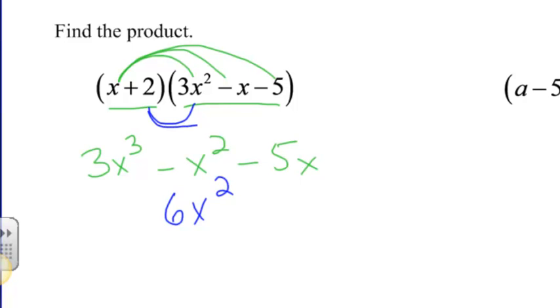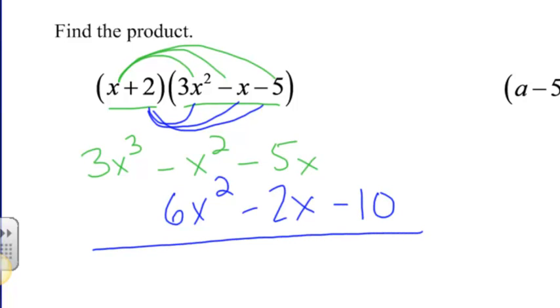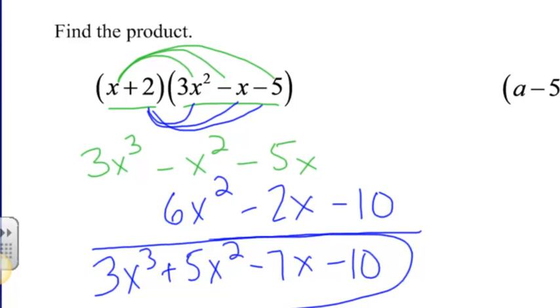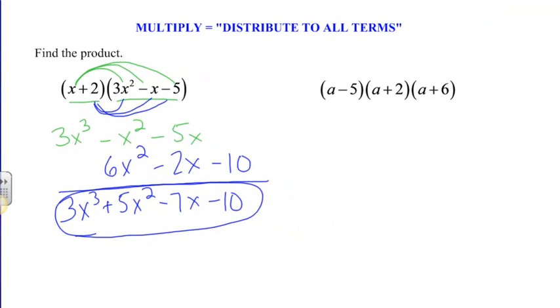That way it's going to be easier to combine like terms. Then I distribute the 2 to the negative x, giving me negative 2x. And then I distribute the 2 to the negative 5, giving me negative 10. Now I have this vertical alignment. Here's my x cubed terms, so I got 3x cubed. I got negative x squared plus 6x squared, which is plus 5x squared. I have negative 5x plus negative 2x, which is negative 7x. And then nothing plus negative 10, so I just have negative 10. That's all we did. It's very similar to foiling, it's just a matter of distributing to each term.